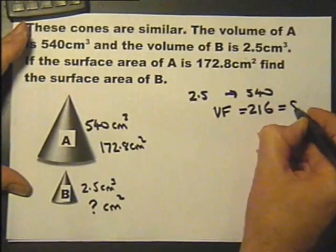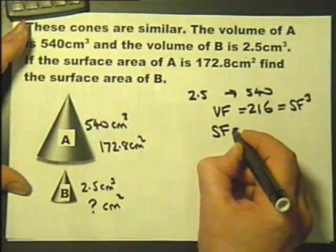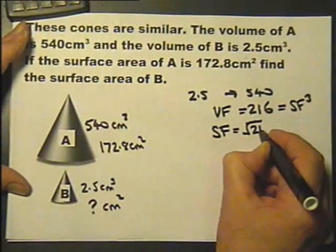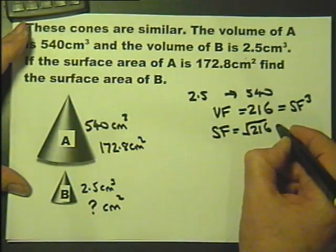Now the volume factor is the scale factor cubed. In other words, the linear scale factor. So the linear scale factor will be the cube root of 216, and if 6 times 6 times 6 is 216, that must be 6.